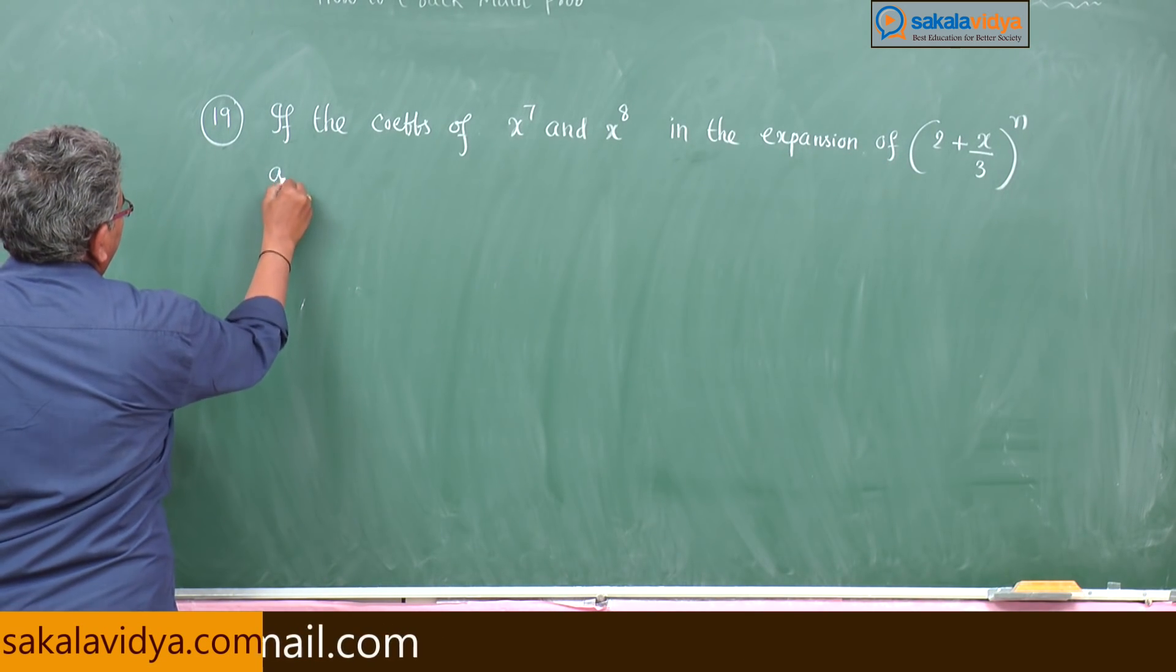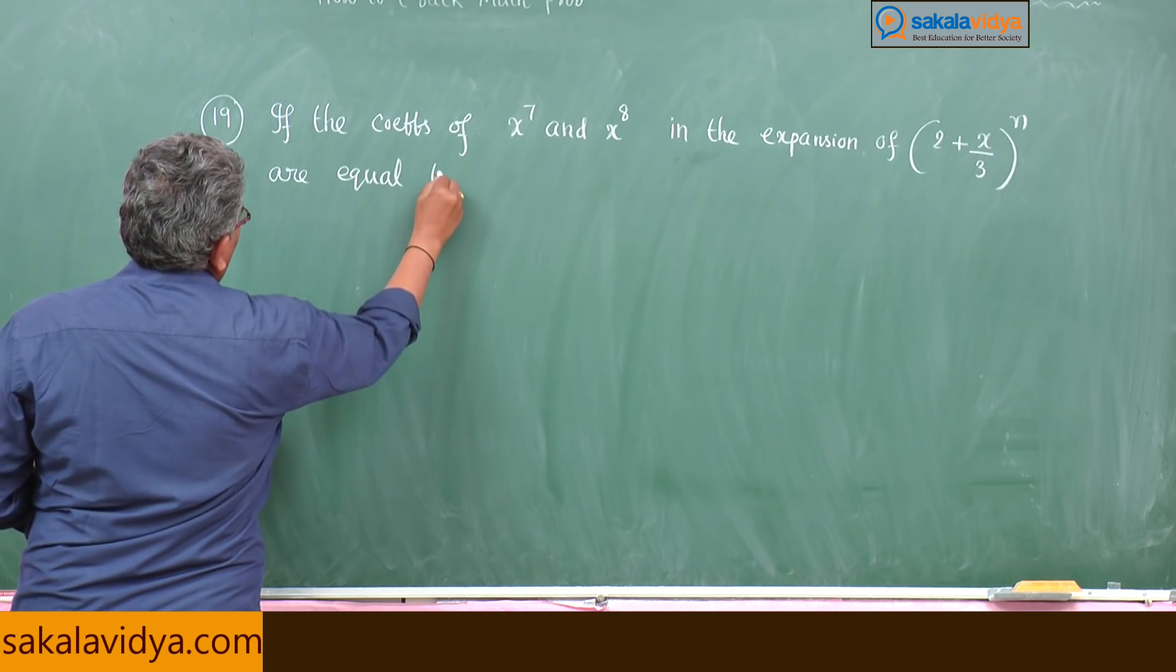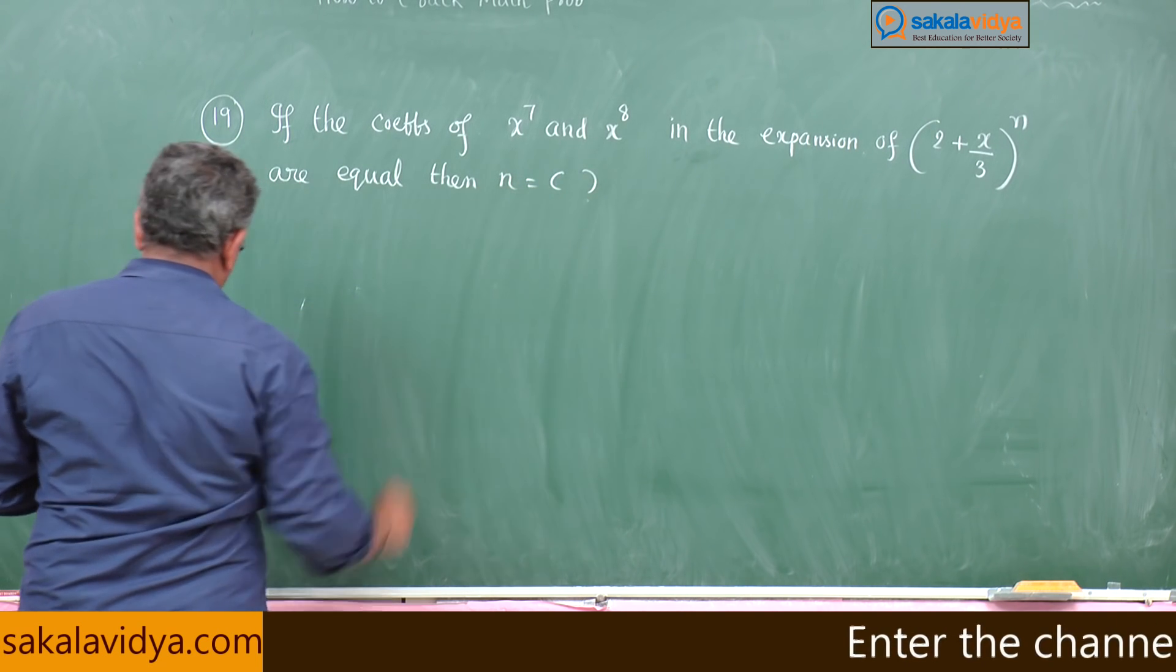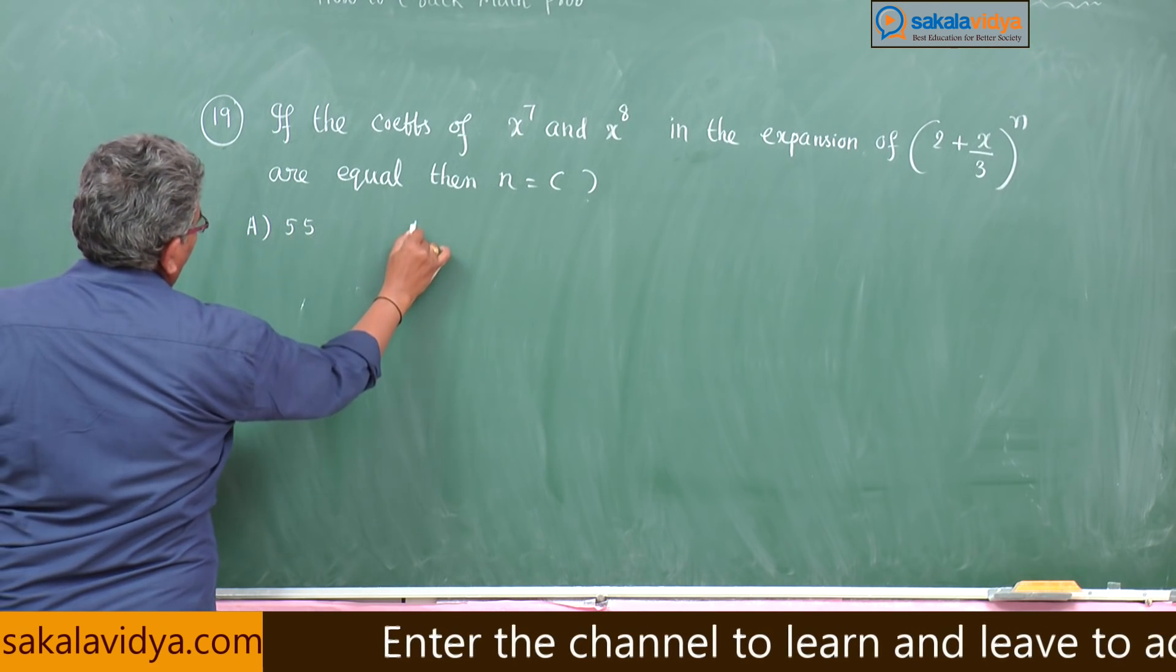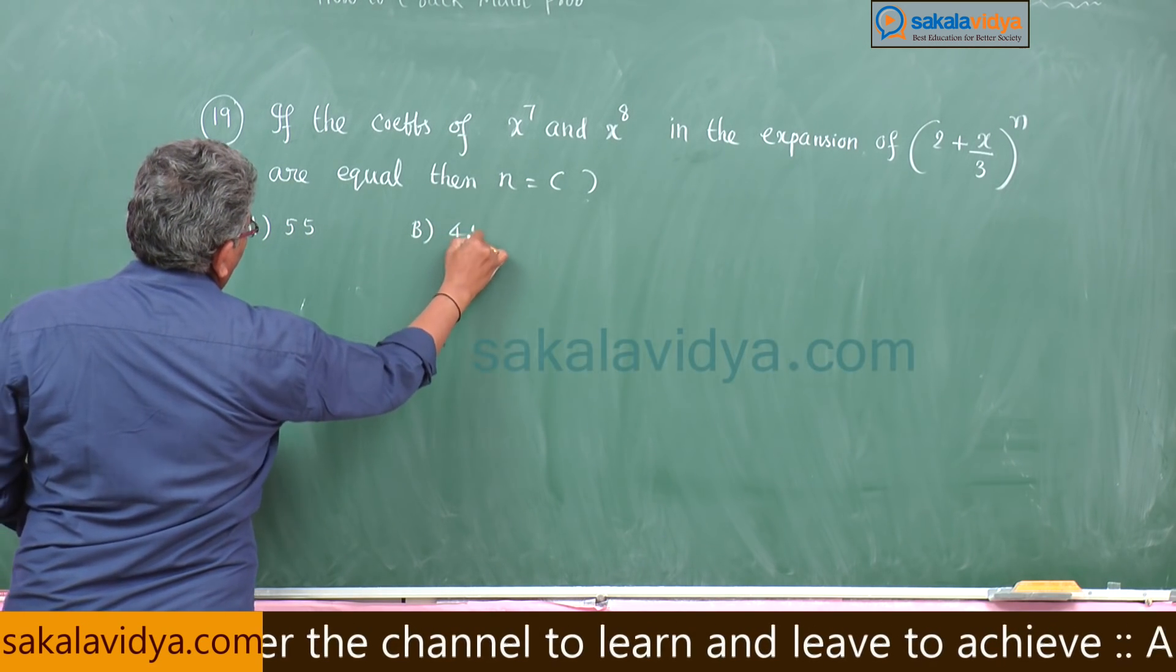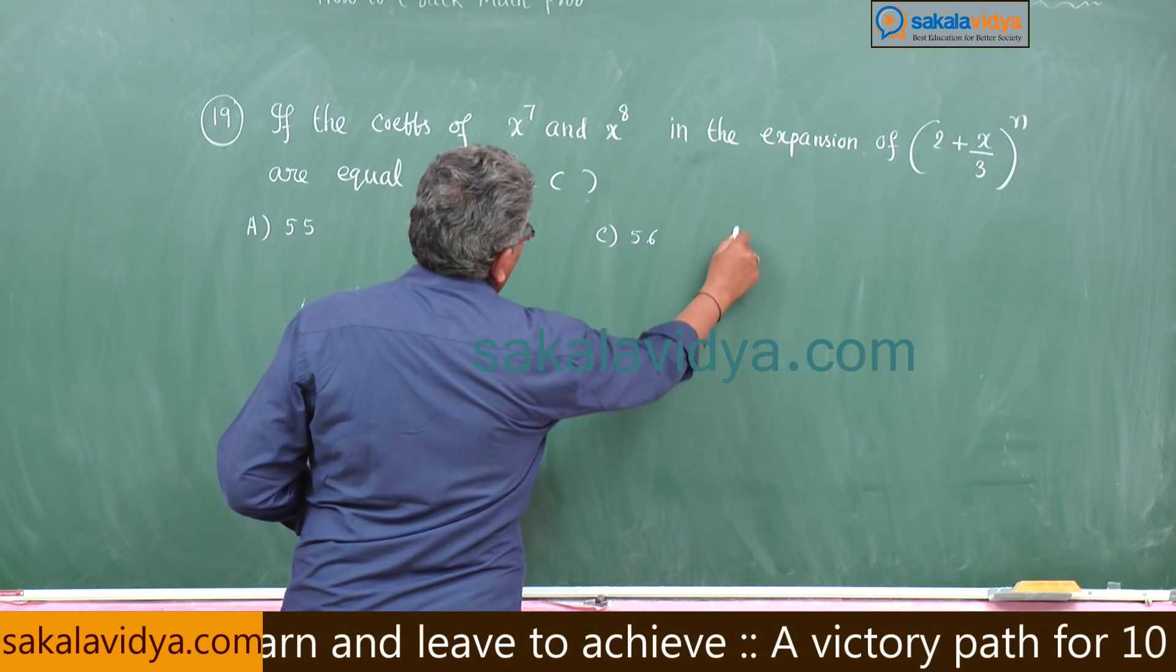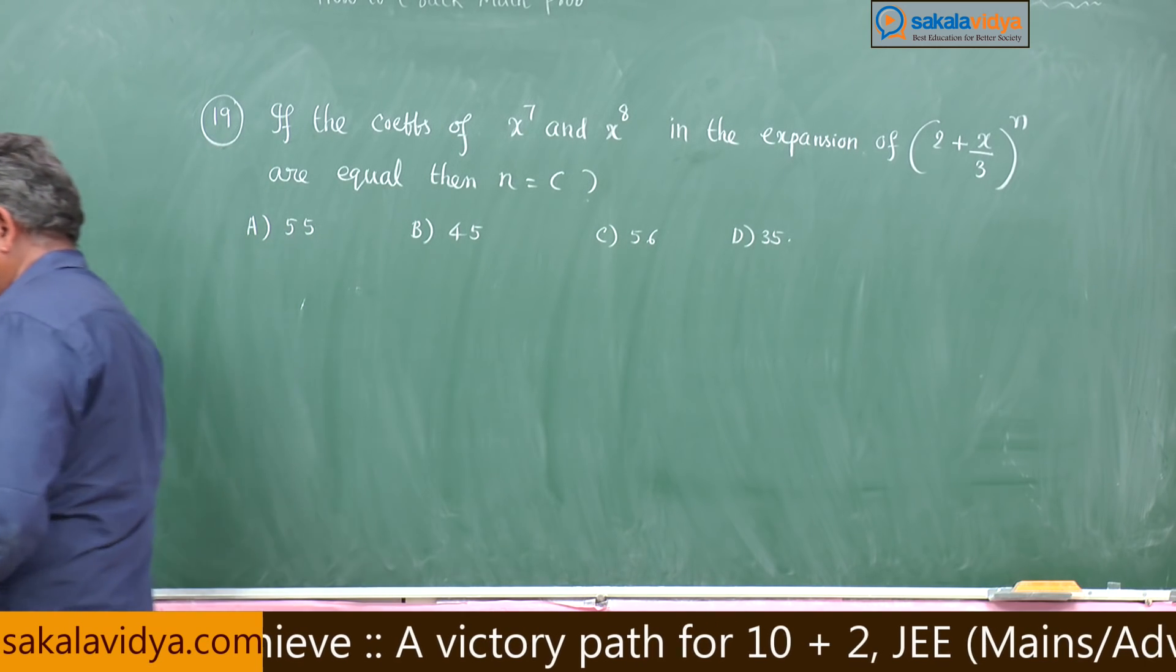then n equals equal to a 55, b 45, c 56, d 35 which is the right option.